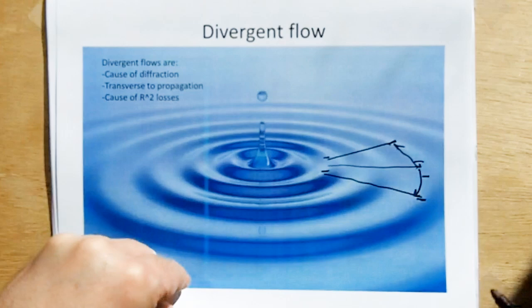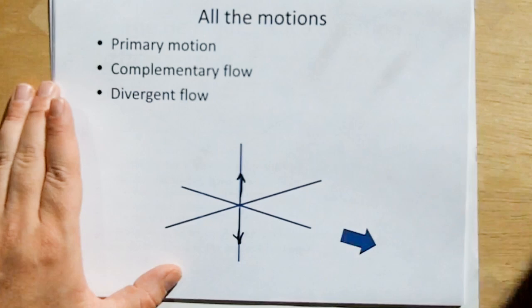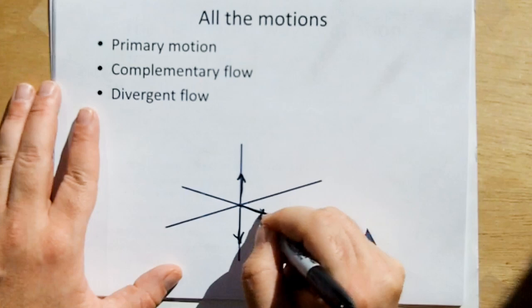So, let's put all the motions down, just so we can keep an accounting of what we have. All right, we have the primary motion, which, let's say, is water waves in the vertical. This is the direction of propagation. We have the complementary motion, or complementary flow. And then we have the divergent flow.